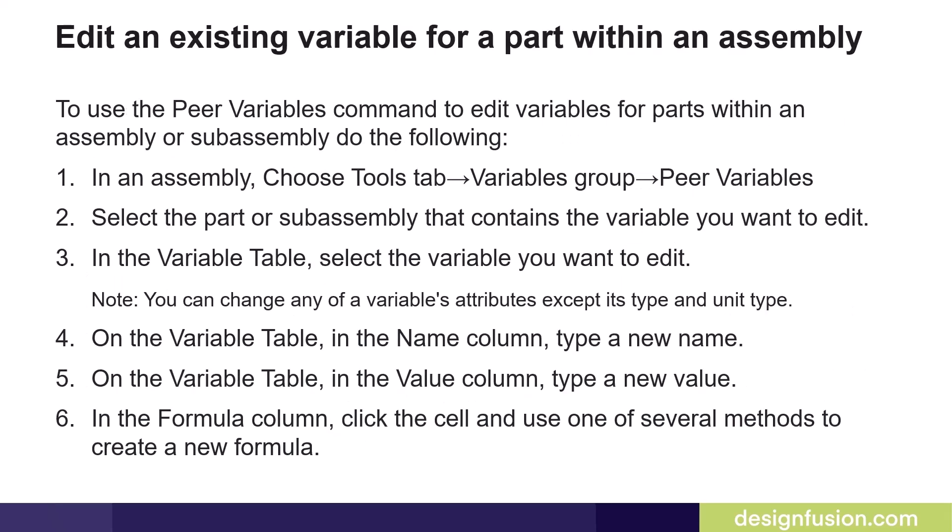To use the Peer Variables command to edit variables for parts within an assembly or sub-assembly, do the following. Select the Peer Variables command and then select the part or sub-assembly that contains the variable you want to edit. In the Variable table, select the variable you want to edit. You can change any of a variable's attributes except its type and unit type — for example, you can change the name, value, or formula.